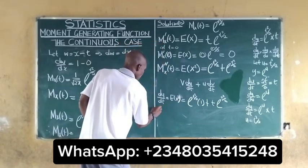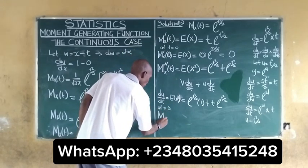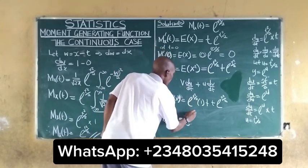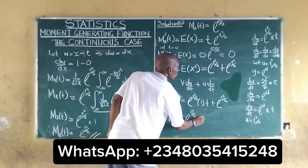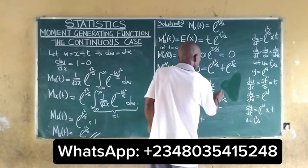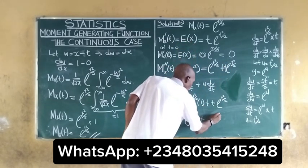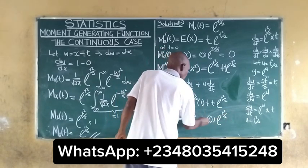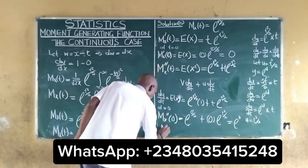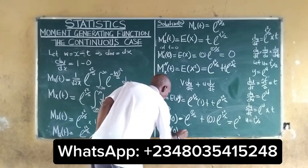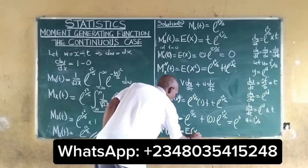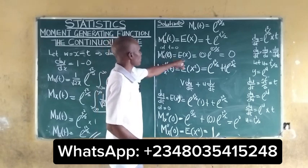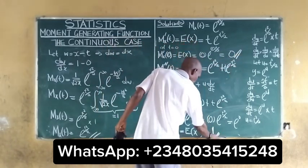At t = 0, we have e^0 + 0 × e^0 = 1 + 0 = 1, because anything raised to the power of 0 is 1. So our second moment, which is E[X²], is equal to 1. Our first moment is 0 and our second moment is 1.